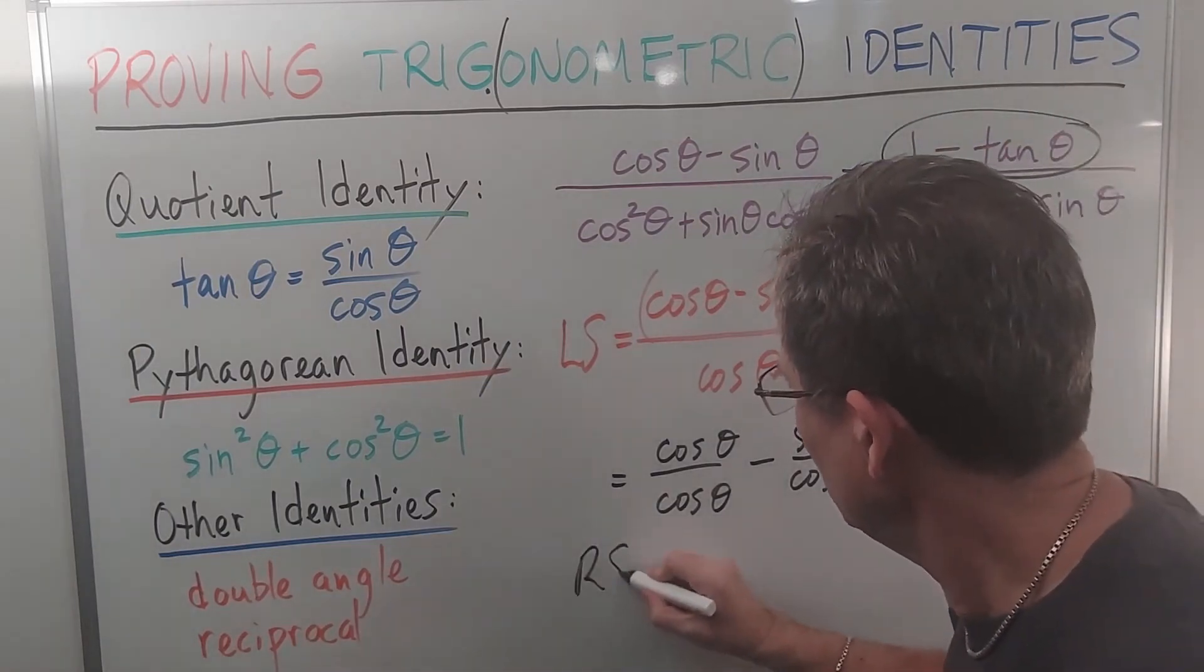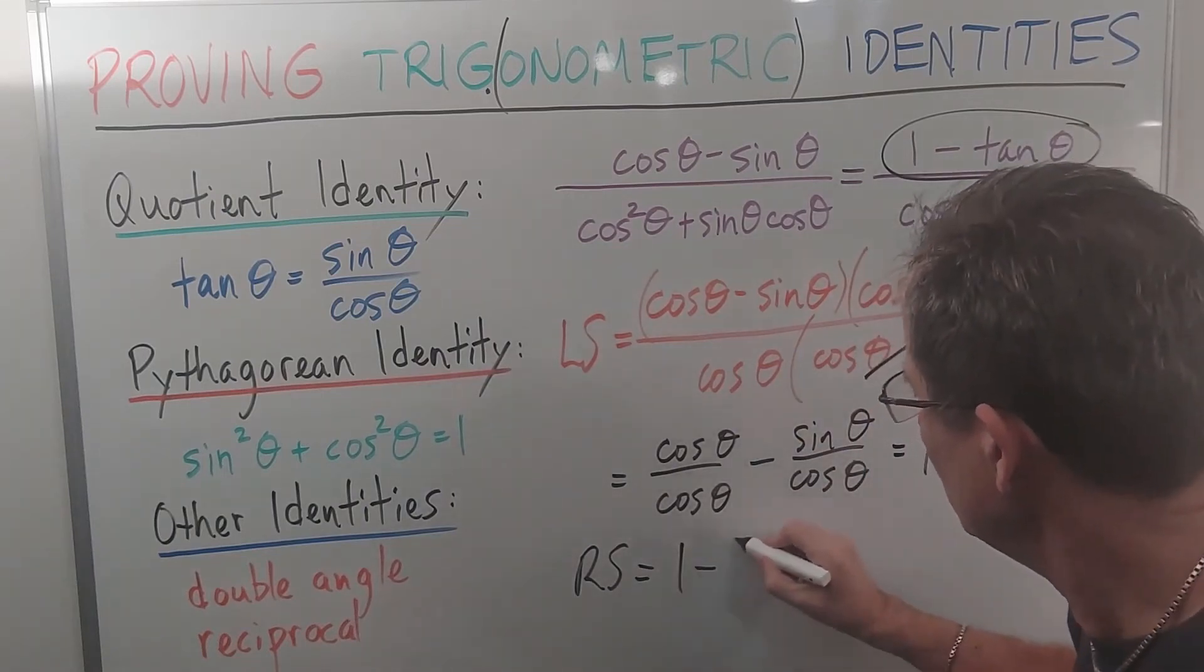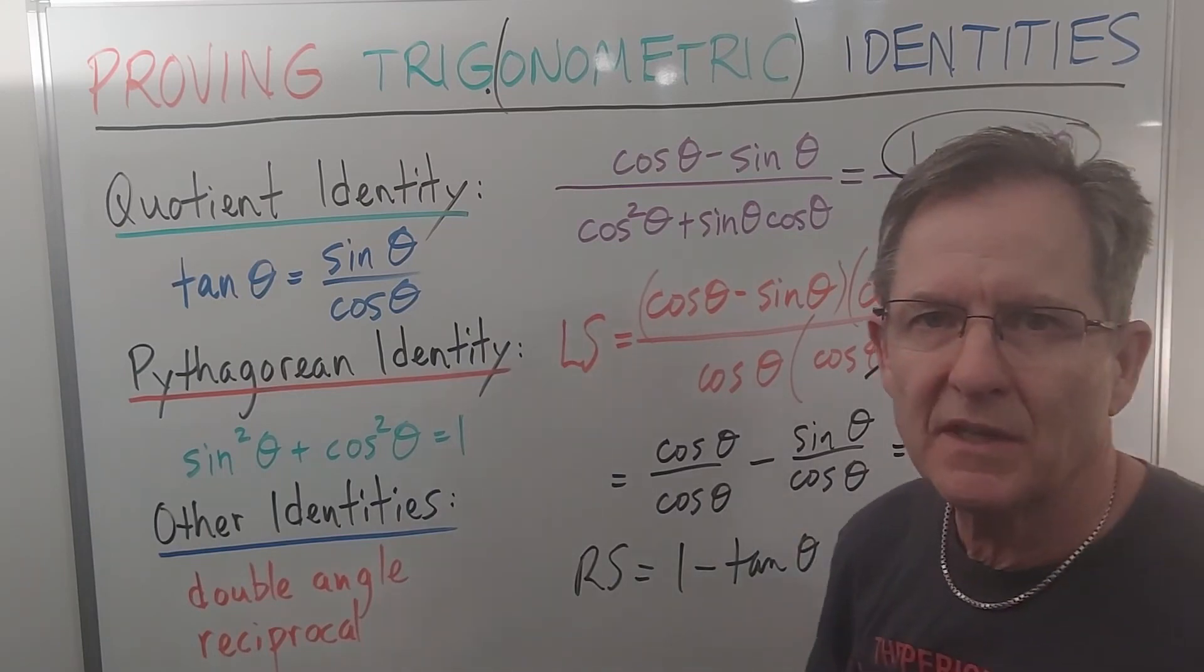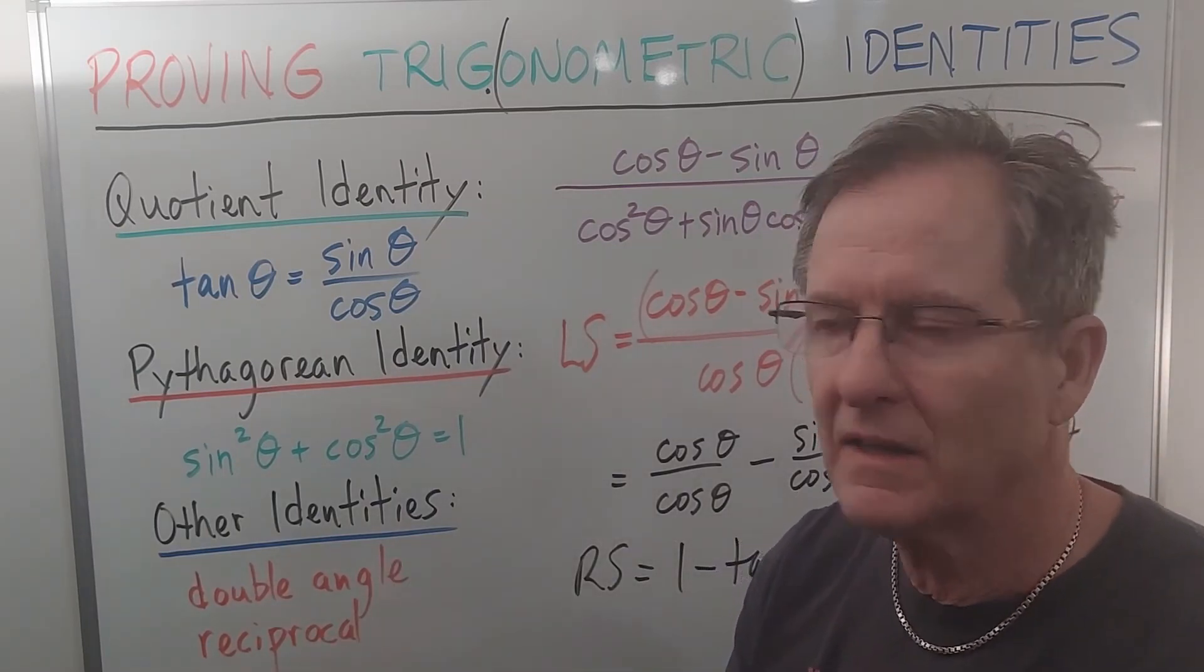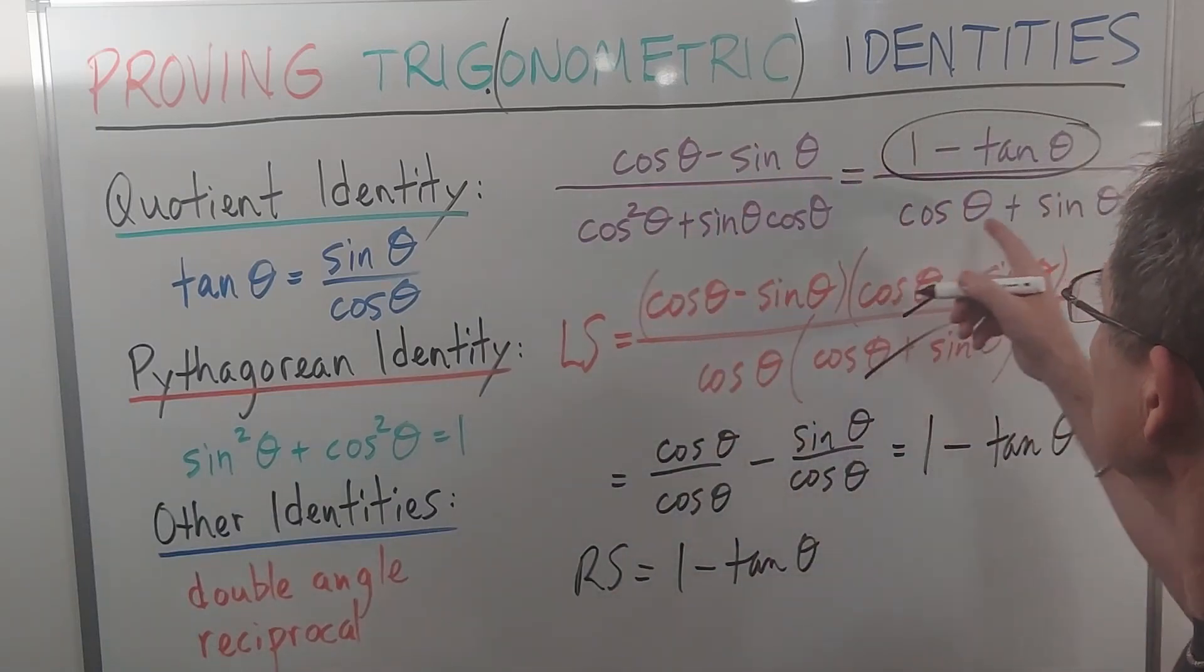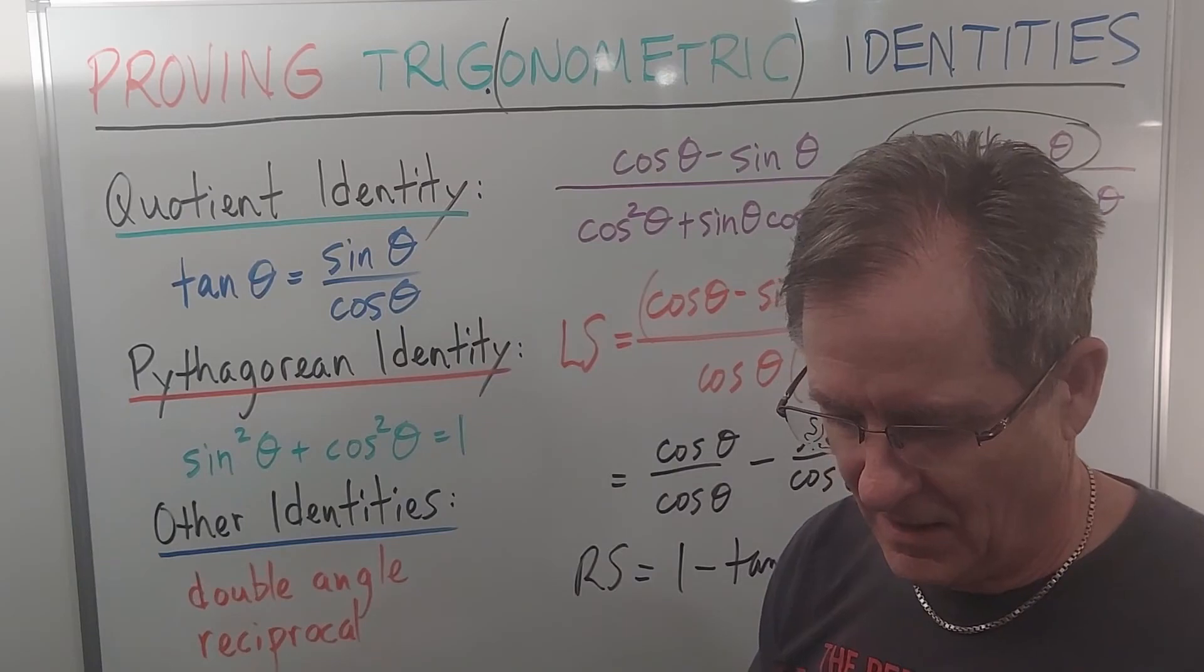Because, remember, after I multiplied the right-hand side by that denominator, I get 1 minus tan θ. So, at this point, you're supposed to say something like since the left side equals the right side, therefore the original identity is true.